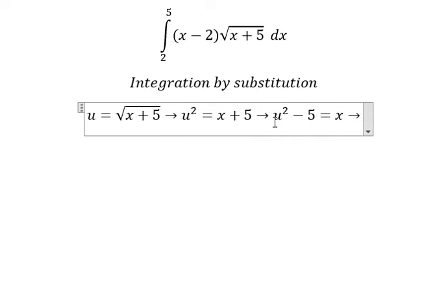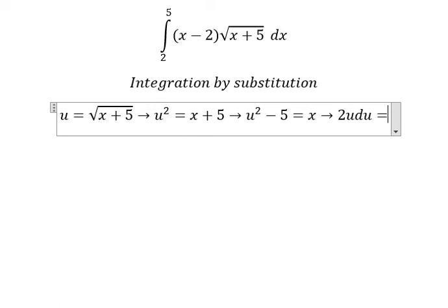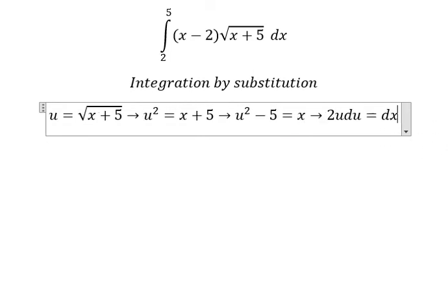Next we take the derivative of both sides. The derivative of u² is 2u du. The derivative of 5 is 0 because it's a constant. The derivative of x is 1, so we have dx. Therefore, 2u du = dx.